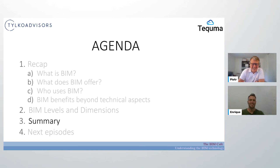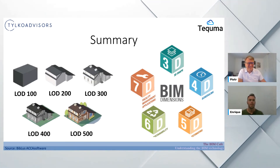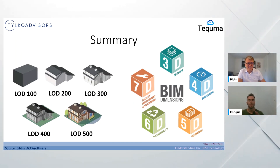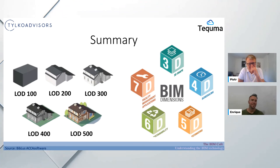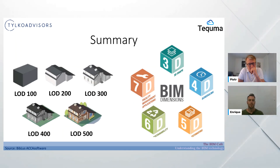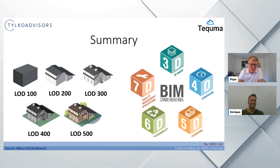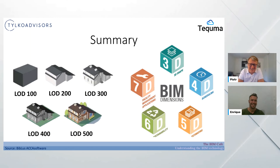To summarize: Level of Design (LOD) runs from 100 to 500, and BIM Dimensions run from 3D to 7D. These don't go together directly but they are related. Most importantly, don't get overwhelmed and try to jump to LOD 500 or 7D on your first project. Go slowly - first achieve 3D, deliver construction documentation of BIM services at LOD 300-350, aiming to 400-500, and slowly implement and build it up.